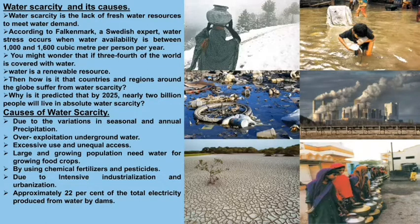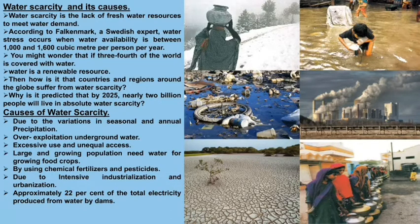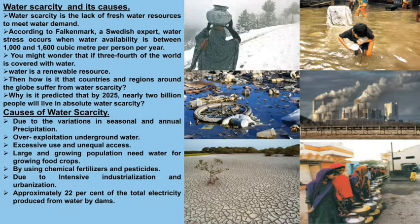For agriculture, chemical fertilizers and pesticides are used, which pollute the water and make it unavailable for use. Due to industrialization and urbanization, water is polluted at a large scale — greenhouse gases cause acid rain, and chemicals are directly thrown into water bodies, making the water unusable even though it is available.